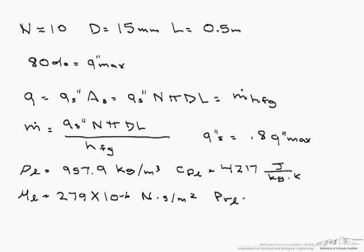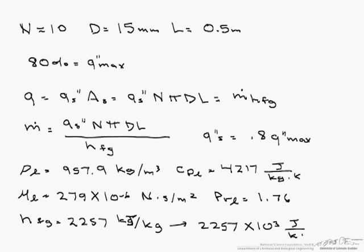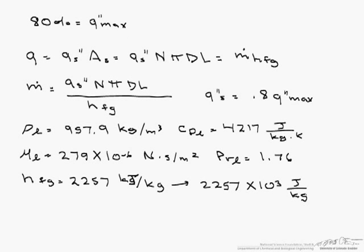The Prandtl number of the liquid is 1.76, and the heat of vaporization is 2257 kJ per kg. We're going to change that to 2257 times 10 to the third joules per kg, since everything else is in joules.